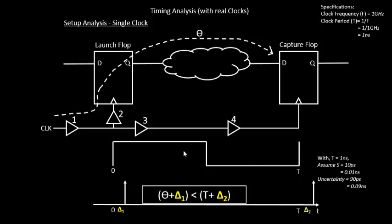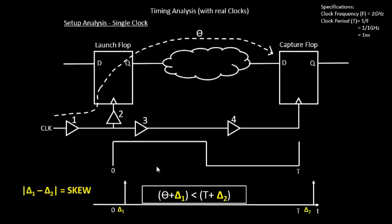This is the visualization of a setup timing equation looking at real clocks. We still need to add the concepts of setup time and uncertainty, which hold good in this case as well — we have just shifted the clock edges, but setup time and uncertainty are still valid for these shifted edges. So the equation will remain the same, and delta1 minus delta2 is called clock skew.